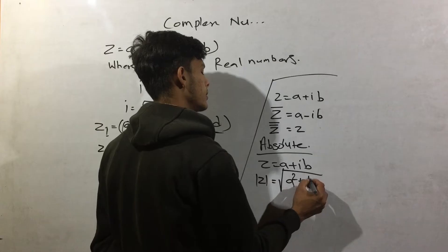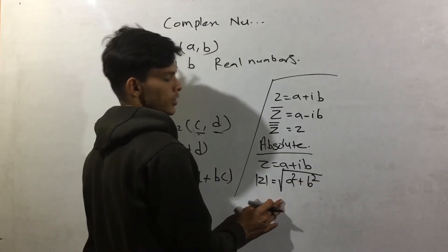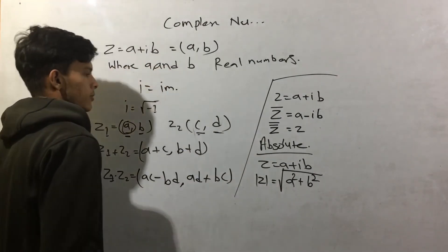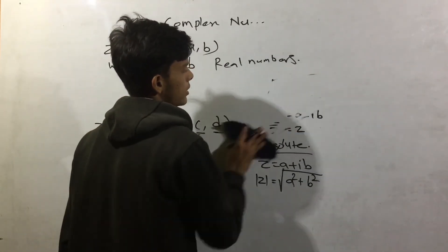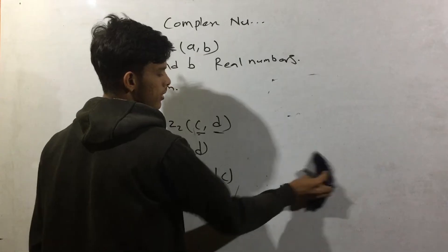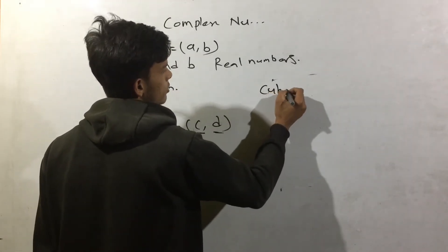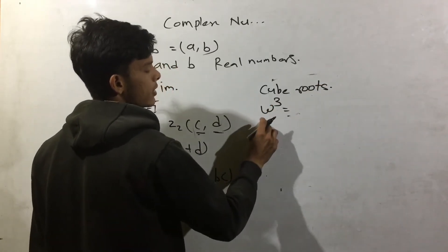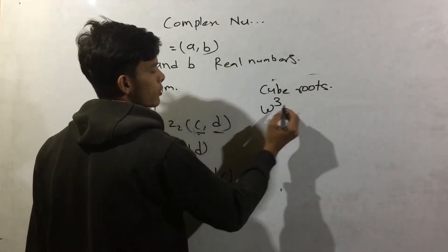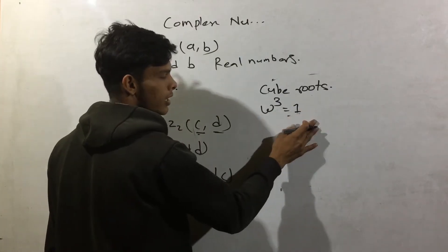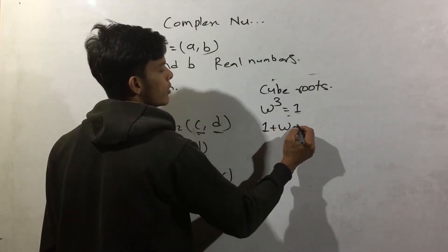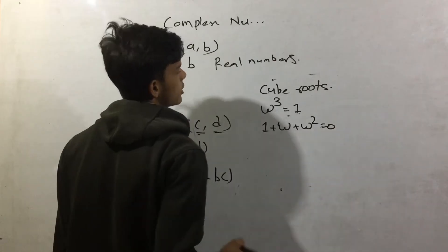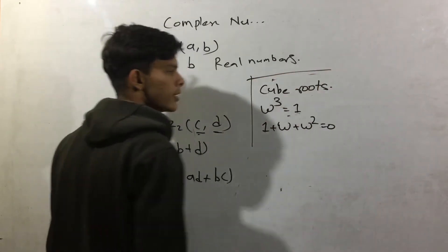The absolute value is the square root of a squared plus b squared. For cube roots of unity: omega cubed equals 1, and 1 plus omega plus omega squared is equal to 0.